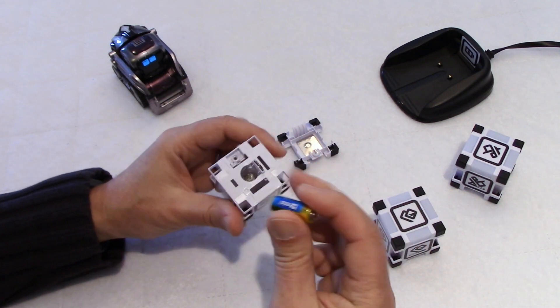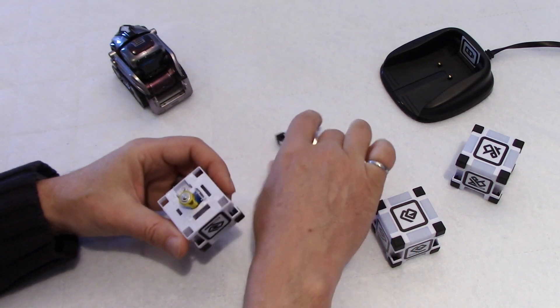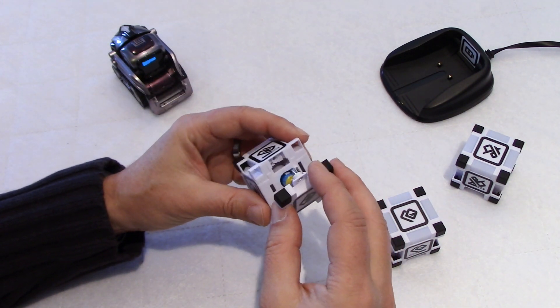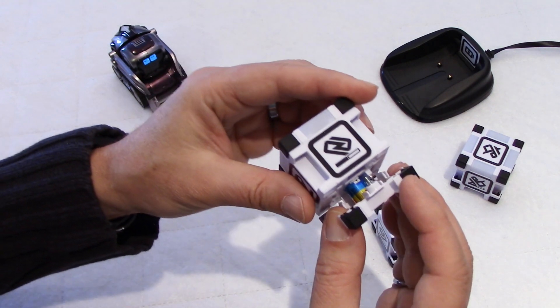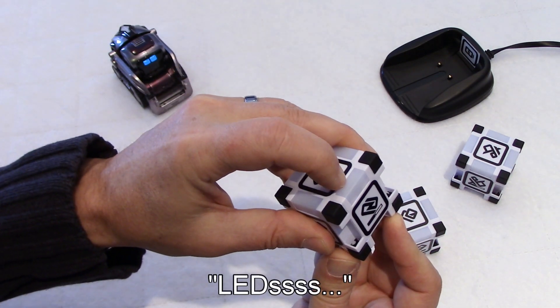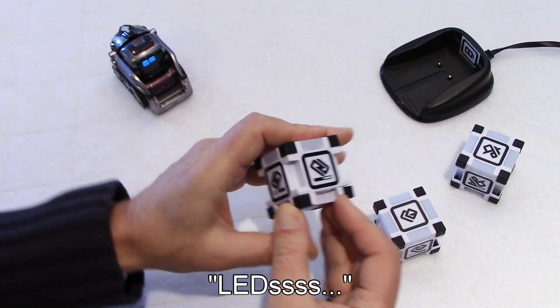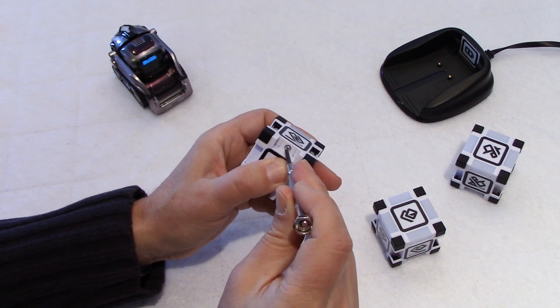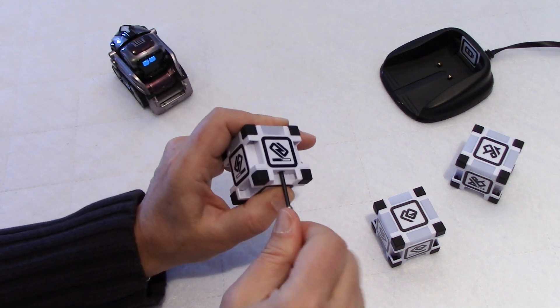So when you put the battery back in, there is a way to know if the battery you're putting in is good. And this is interesting. As you will see here, as I close the contact, the LED here cycles. So it means that the battery is good and the cube was reset correctly.